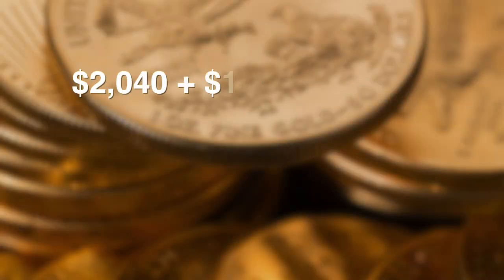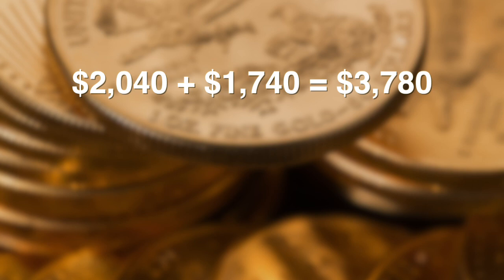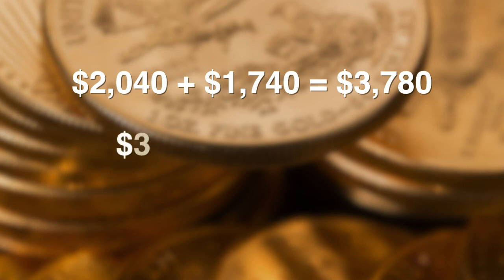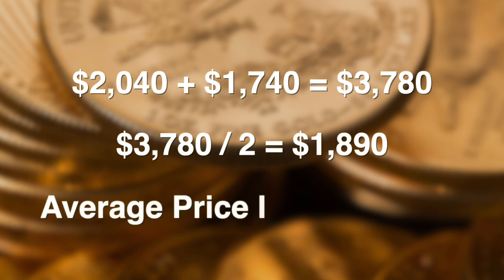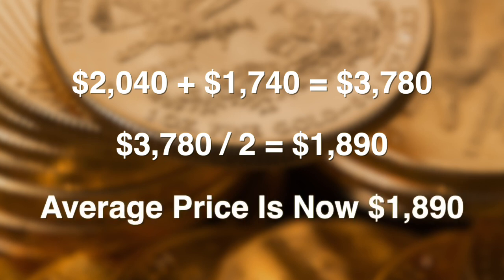Let's look at an example of this. Your first purchase at $2,040 plus your second purchase at $1,740 totals $3,780. $3,780 divided by two purchases equals $1,890. Now your average price is $1,890 instead of the original $2,040.